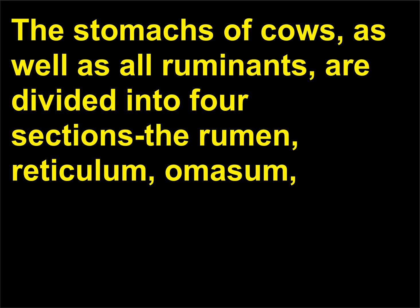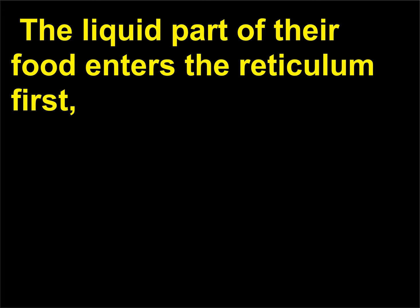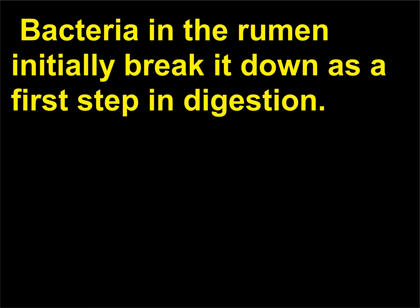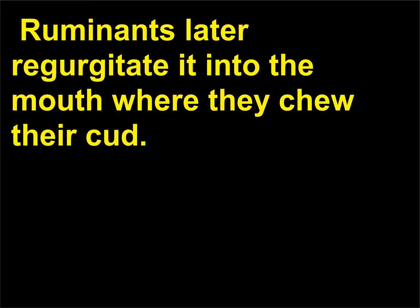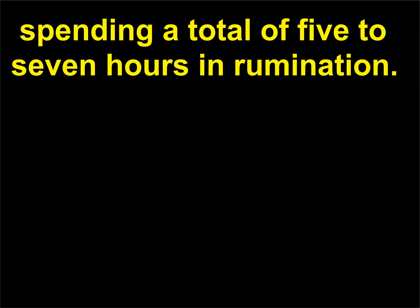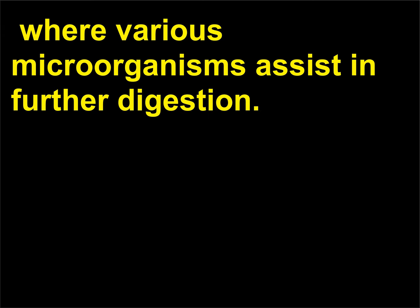The stomachs of cows, as well as all ruminants, are divided into four sections. The ruminants eat rapidly and do not chew much of their food completely before they swallow it. The liquid part of their food enters the reticulum first, while the solid part enters the rumen where it softens. Bacteria in the rumen initially break it down as a first step in digestion. Ruminants later regurgitate it into the mouth where they chew their cud. Cows chew their cud about six to eight times per day, spending a total of five to seven hours in rumination. The chewed cud goes directly into the other chambers of the stomach, where various micro-organisms assist in further digestion.